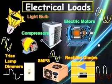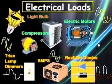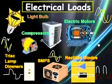The electric utility supplies your residence with AC voltage and current, but some electrical loads convert a percentage of good AC current into types of bad AC current as a byproduct of the equipment's normal operation. These bad currents are what cause low power factor.